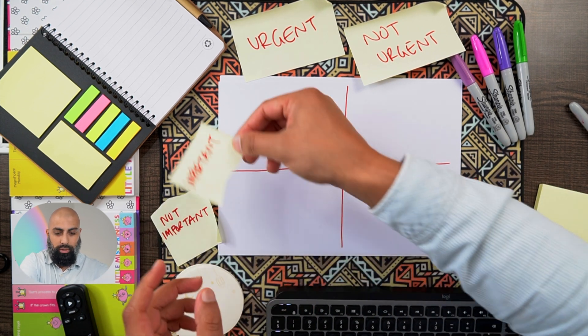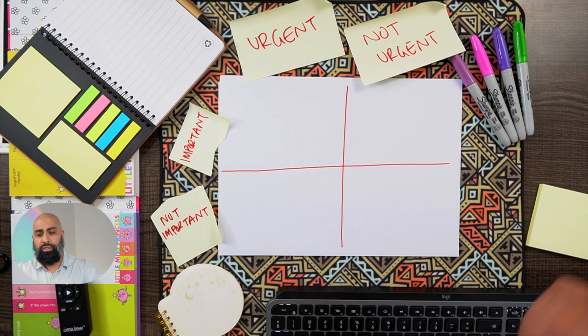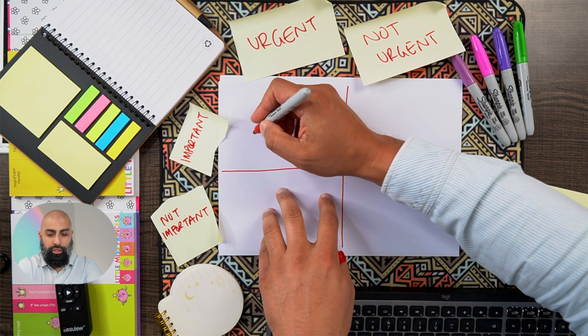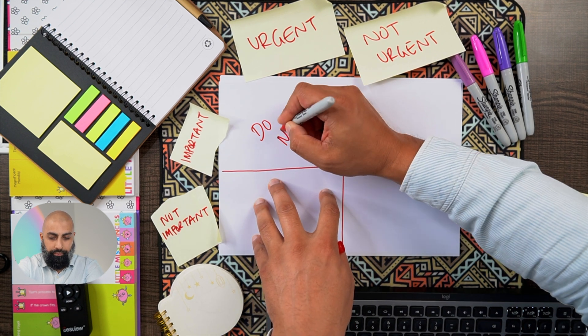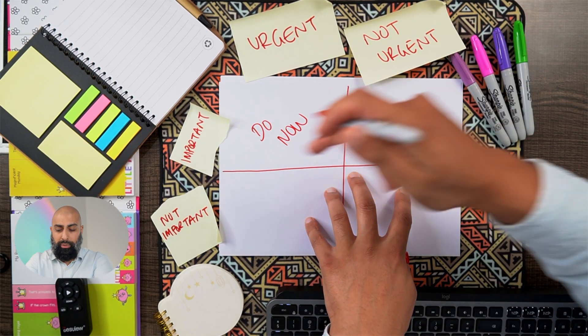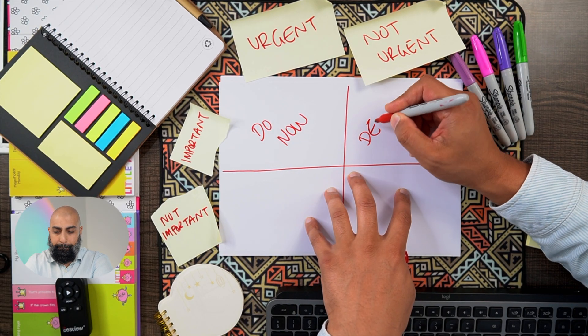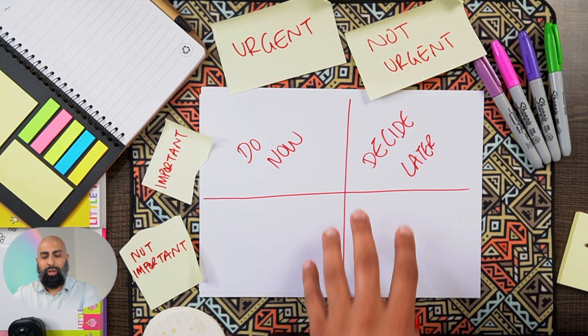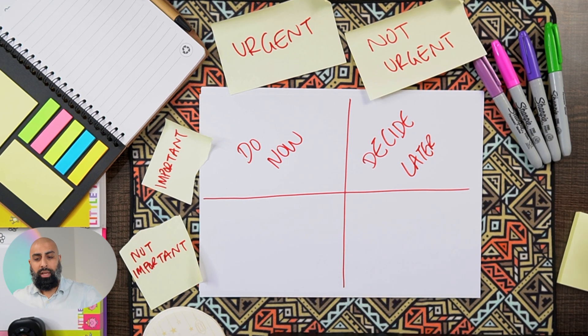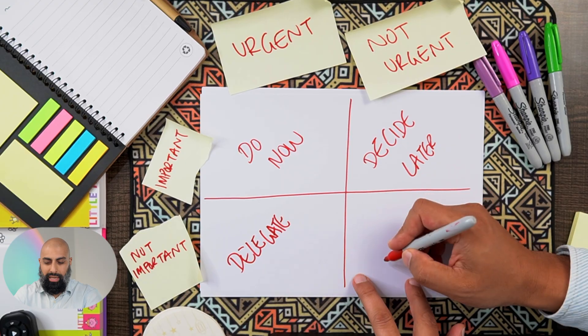Urgent and important means 'do now' — things you need to get done right away. Not urgent but important means we're going to schedule them later. Urgent but not important tasks are ones we can delegate to someone else. And finally, things that are neither important nor urgent are just distractions and a waste of time, so we label that 'delete.'